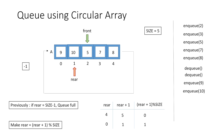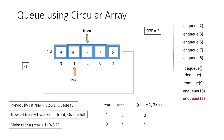Now if we try to insert another element 11, we can't, because incrementing rear and inserting 11 would override the value 5. So we redefine the condition to check when the queue is full: if (rear + 1) modulus size equals front, we say the queue is full — which means whenever the element next to rear is the front of the queue, the queue is full.